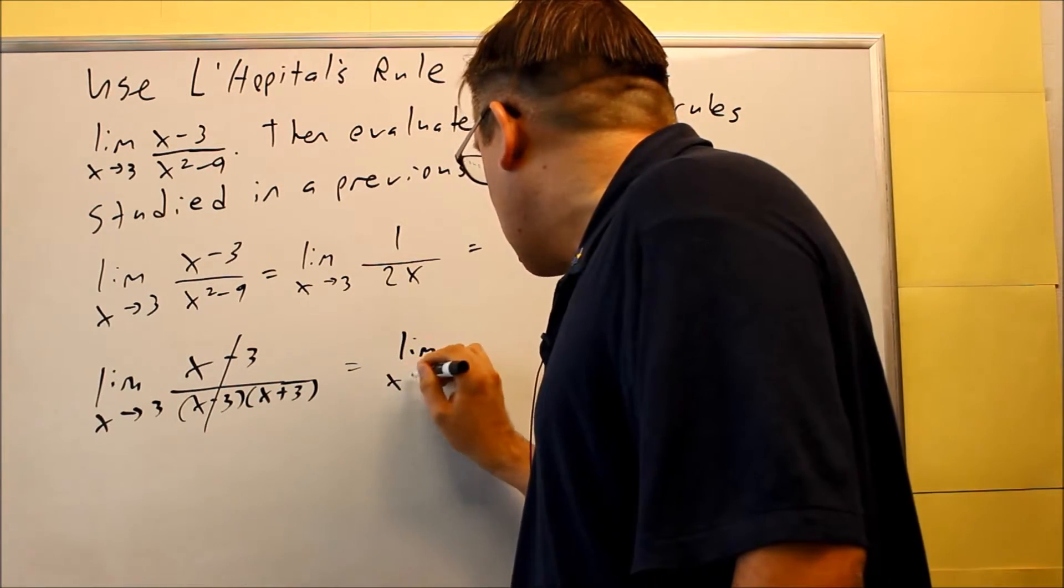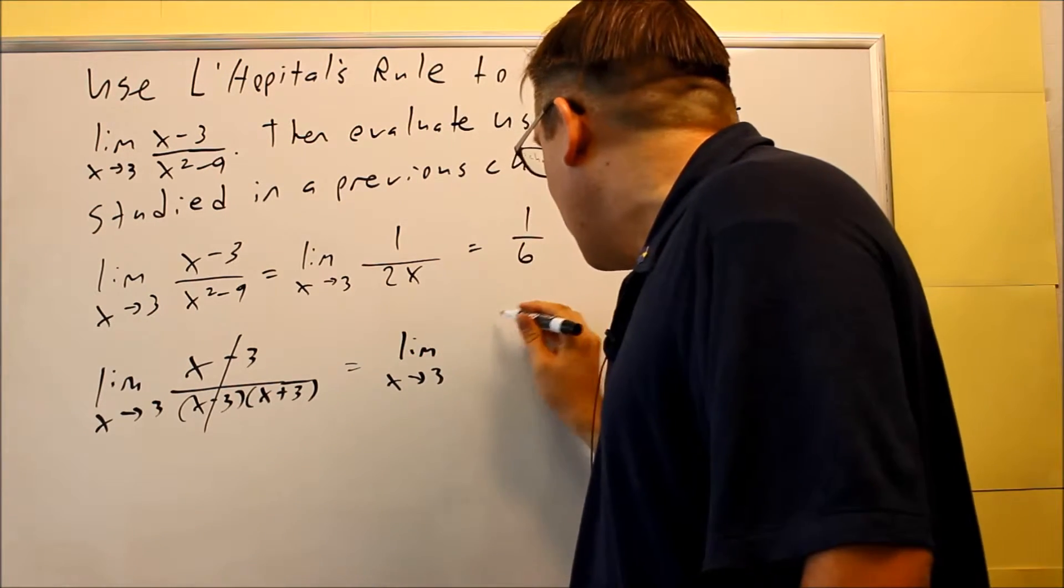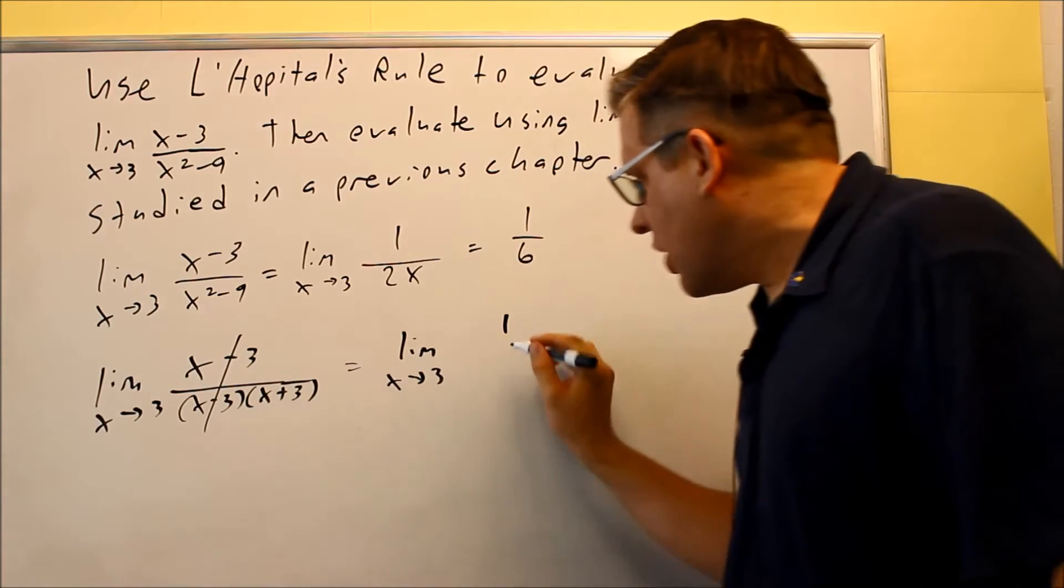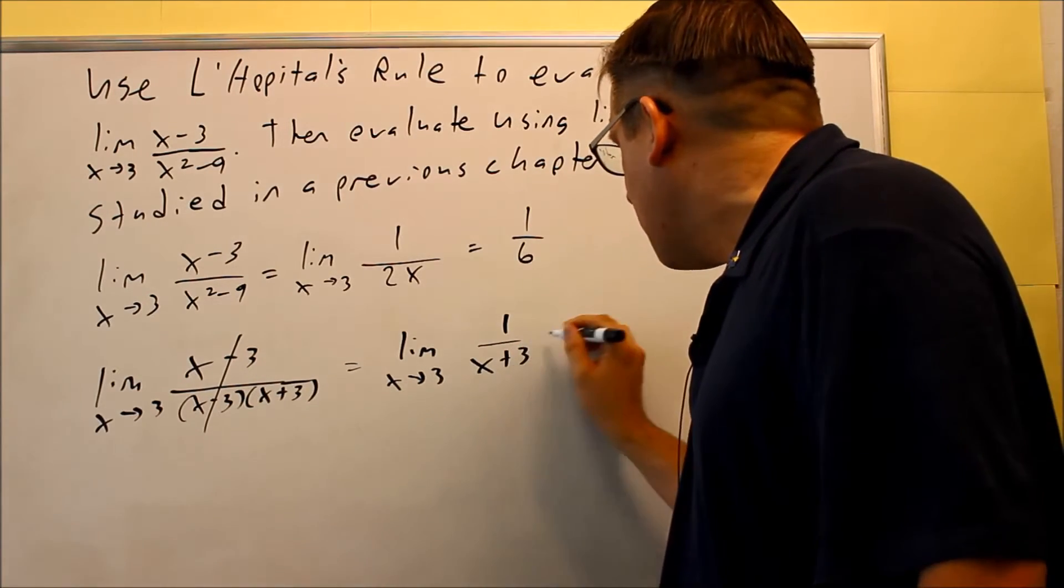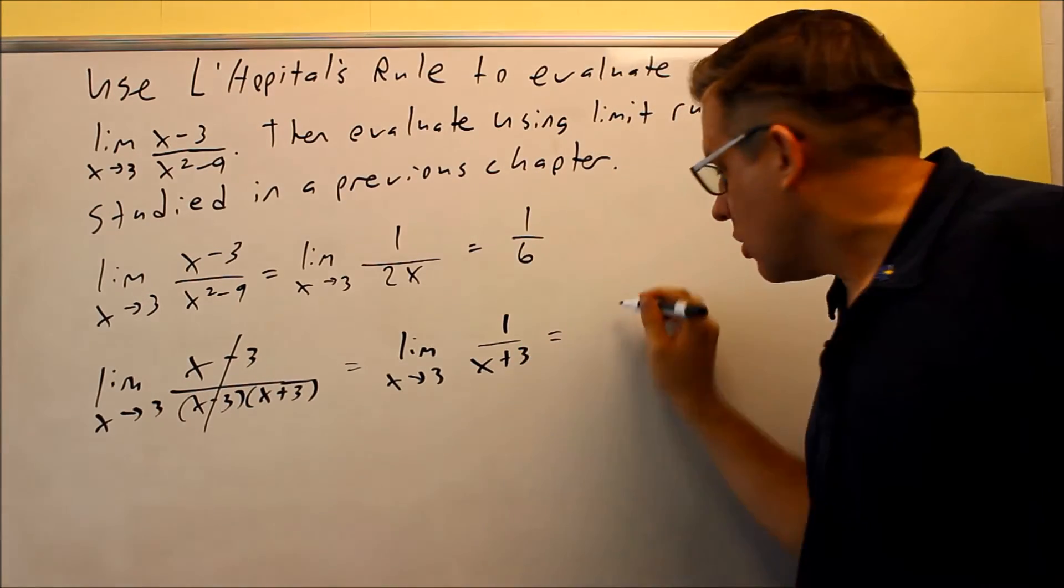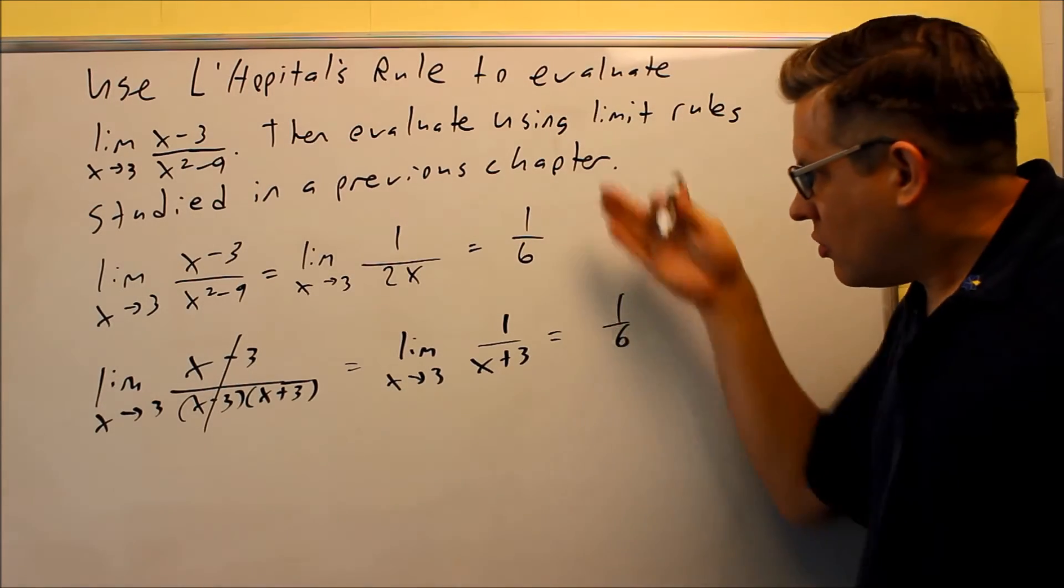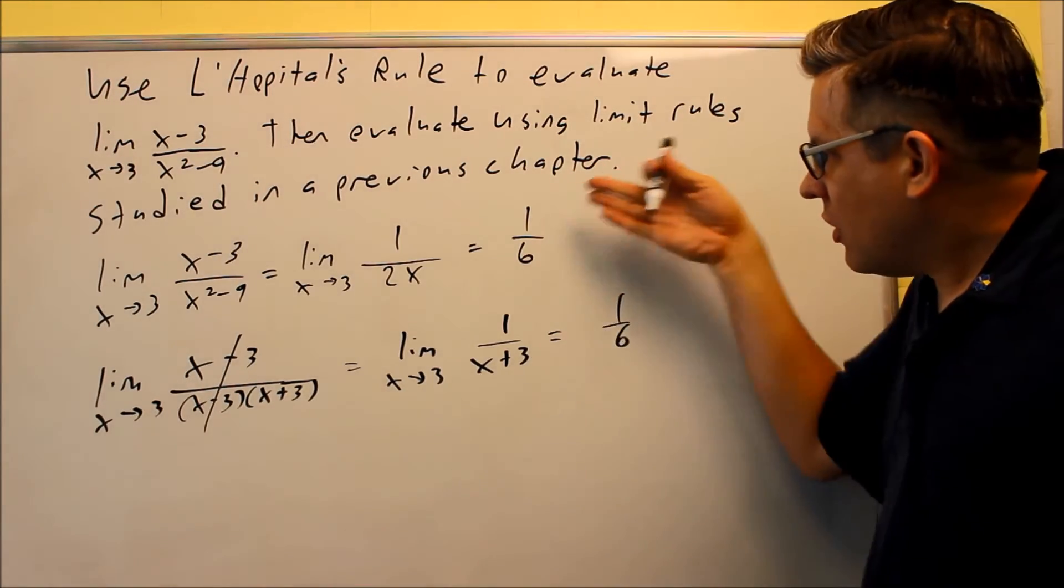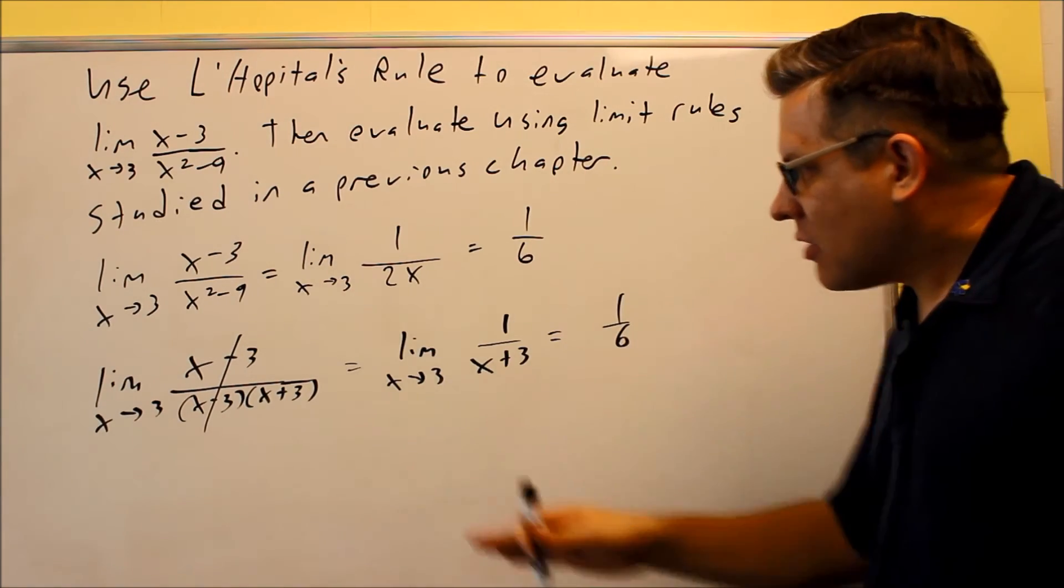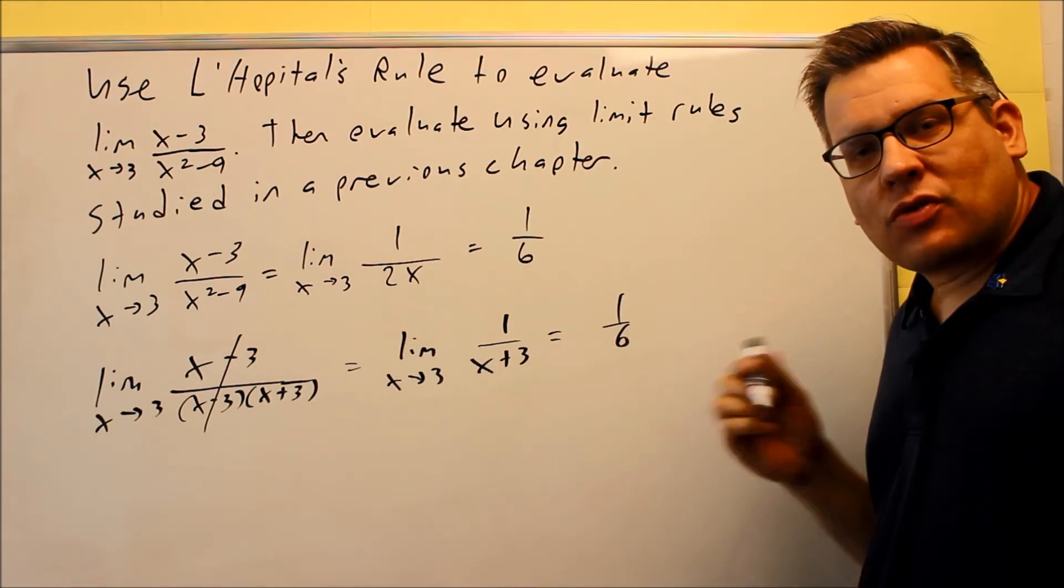Now we're left with the limit as x goes to 3 of 1 over x plus 3. Notice if you put 3 in here, you also get 1 over 6. So you get the same answer. They're showing you that L'Hôpital's Rule will work and give you the same exact answer as traditional methods that we've talked about before.